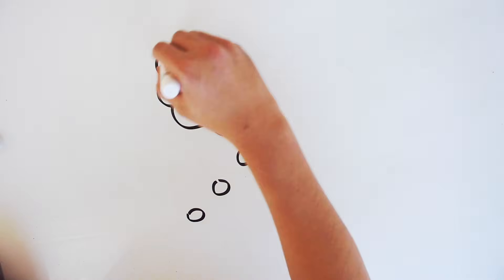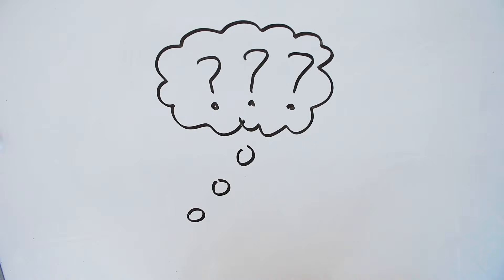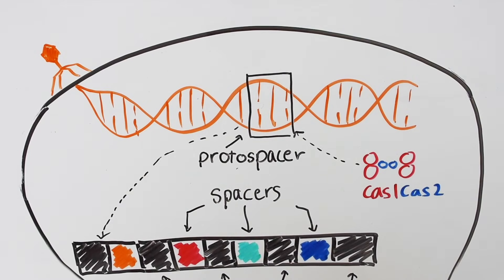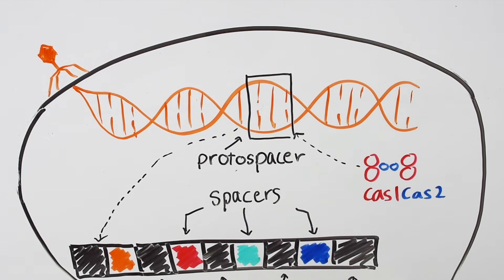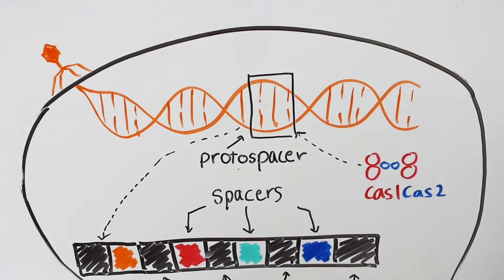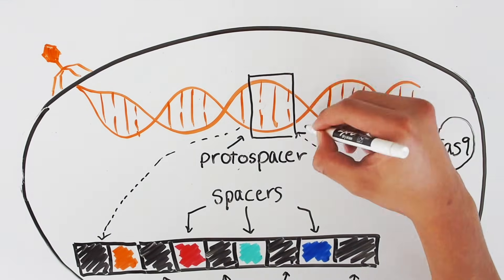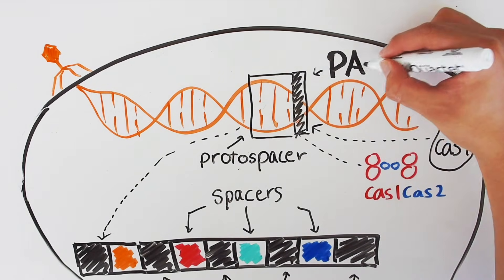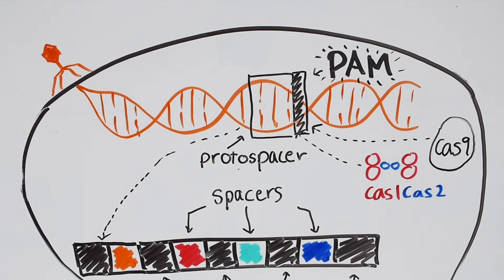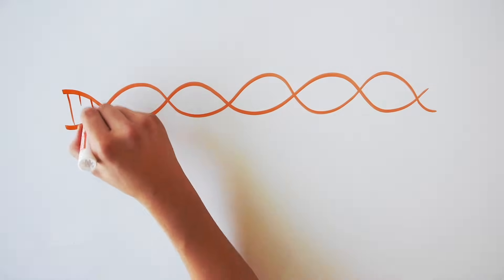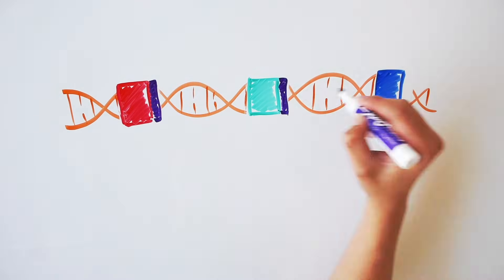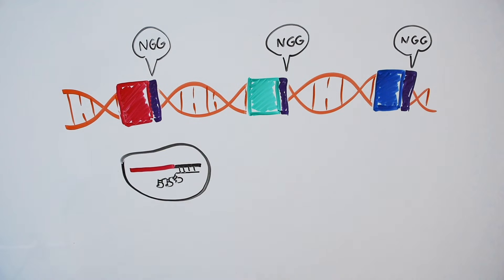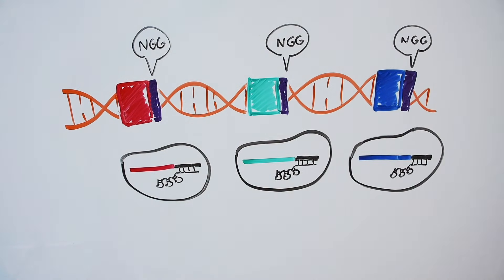But how is it that there is always a PAM sequence at a true Cas9 target? In the DNA acquisition step we covered previously, the Cas1-Cas2 protein complex is in charge of capturing new spacers from incoming viral DNA. Cas9 works with Cas1 and Cas2 to find a PAM sequence and remove the protospacer next to it. Only picking targets with PAMs guarantees that when the same virus infects again and Cas9 is armed with a matching CRISPR RNA guide, nothing will stop it from destroying the enemy DNA.